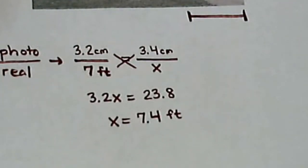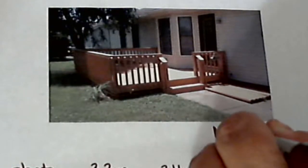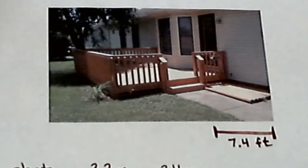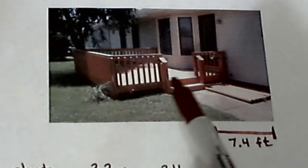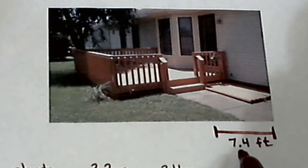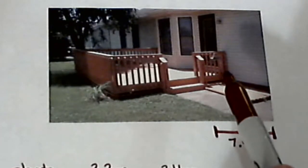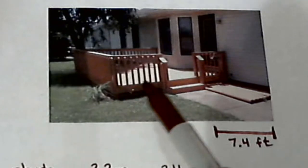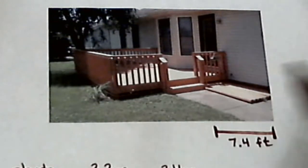So what we would do is send this photo back to our colleagues and let them know that this distance on the photo is 7.4 feet. Now if in the course of their investigation they had to figure out the total width of this back deck, we know that this distance here, which was 3.4 centimeters, is actually 7.4 feet. So now they can measure any distance in centimeters and use the ratio method to convert that into feet.